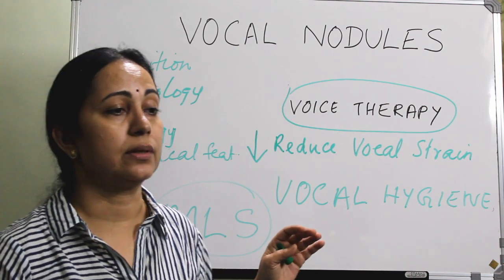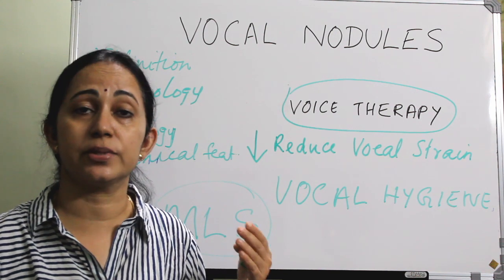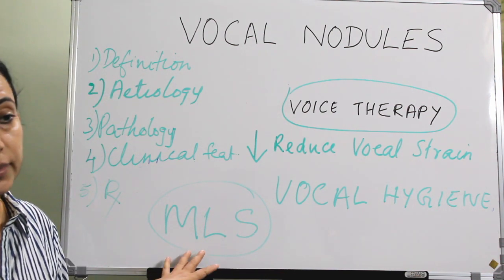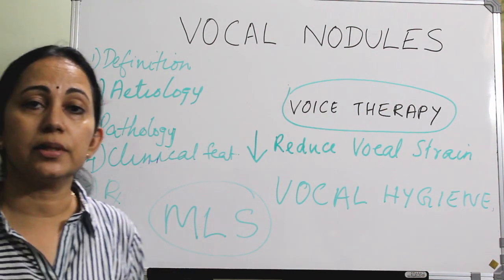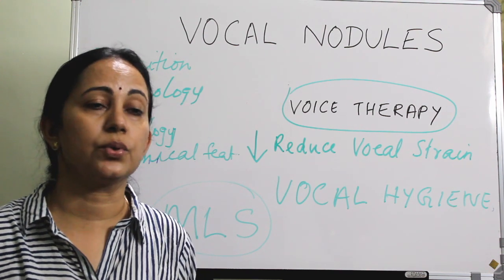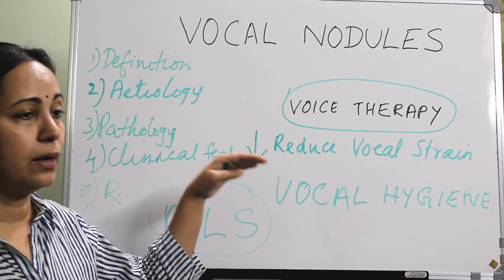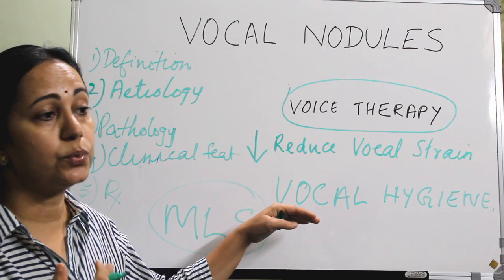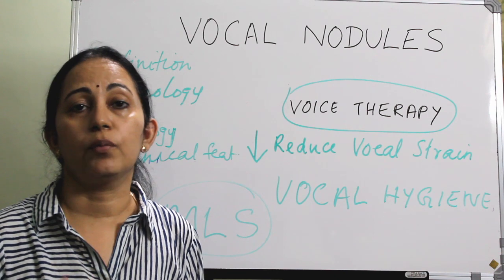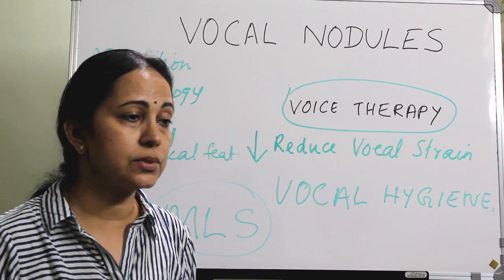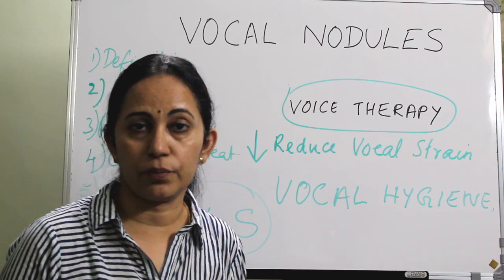Surgery is always performed under a microscope, either with cold instruments or laser excision of the vocal nodule — this is called microlaryngeal surgery. The surgical specimen should always be sent for histopathological examination. Even after surgery, the patient should be advised to continue voice therapy and maintain vocal hygiene — using the correct tone of voice, avoiding voice abuse and overuse, and taking frequent sips of warm fluids.